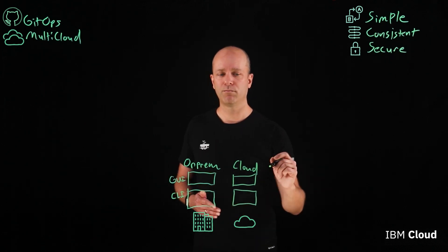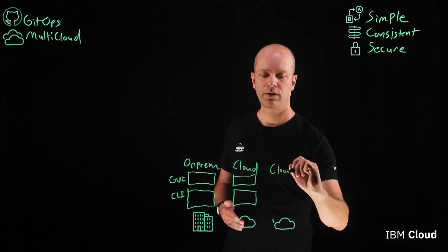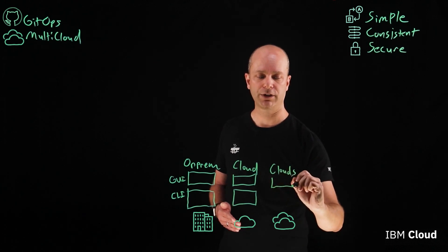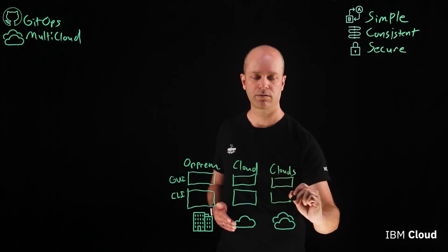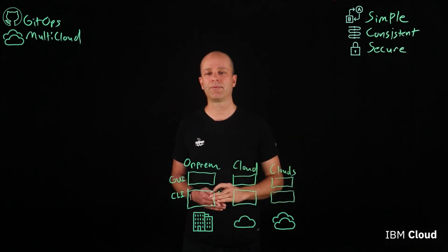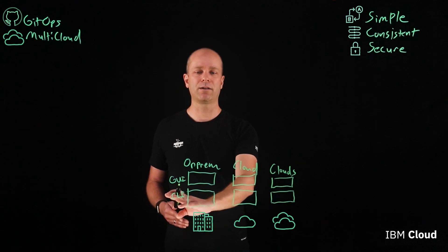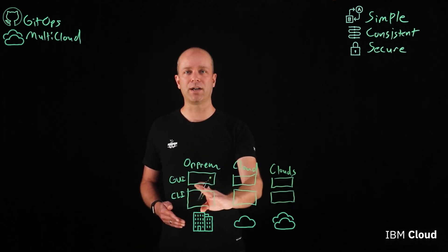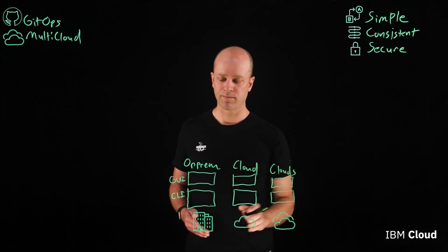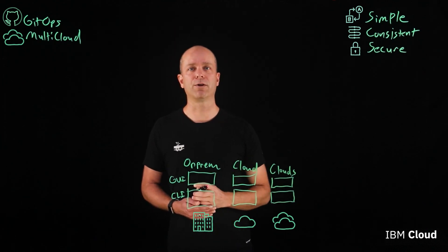The advantages of cloud are there, so they continue. Now they add additional clouds in order to have the flexibility to move their applications from one cloud to the next, or use multiple clouds for different purposes. So now you have GUI and CLI across your on-prem, your first cloud, and any other cloud that you're using — and things start to become pretty difficult.